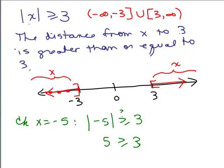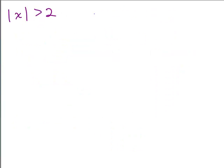So the solution to the absolute value of X is greater than or equal to 3 is a union. In interval notation, it's negative infinity to negative 3 union 3 to infinity. We can't squish it between negative 3 and 3 the way we did with less than or equal to — that's one key difference about greater than or equal. It comes out to a union, two different pieces when the number is positive. Go ahead and try the next problem and see if you can write the solution in interval notation and graph it.